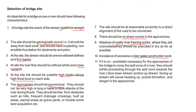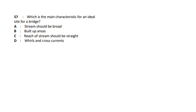To summarize the ideal bridge site criteria: the reach of the stream should be straight; there should be no earthquakes in the geological zone; no cross currents; high flood banks on each side; approaches should be economical with no sharp curves; we should be able to avoid river training work; and avoid excessive underwater construction.